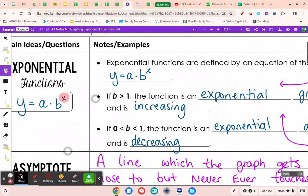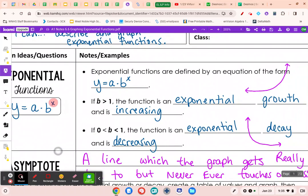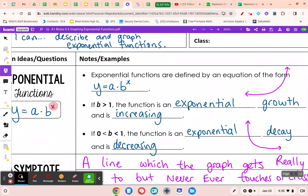So exponential functions are defined by an equation in the form y equals a times b to the x. If b is greater than 1, the function is an exponential growth and increasing. This is exponential growth. It is getting bigger as it goes to the right. If b is a fraction between 0 and 1, the function is an exponential decay and is decreasing.